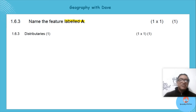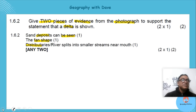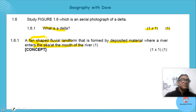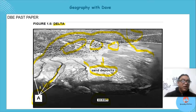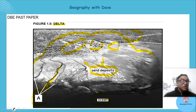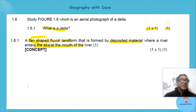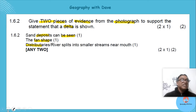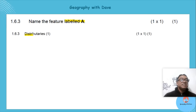Name the feature labelled A — the examiner is already giving a little hint there. If you looked at the source again, we worked it out beforehand: that is a distributary.